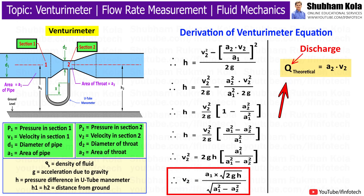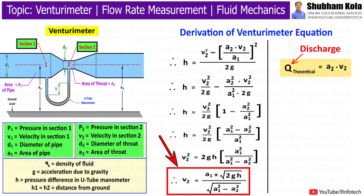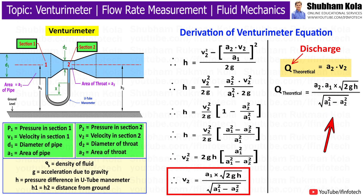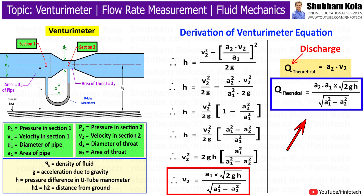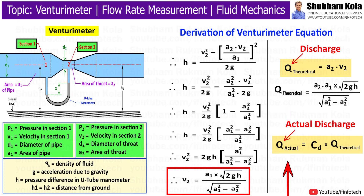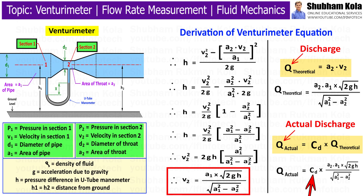The discharge through Venturimeter, i.e., Q, is equal to A2·V2. We have already obtained the equation for V2, so substituting this value, this is the discharge through Venturimeter under ideal condition, which is called the Theoretical Discharge. The actual discharge is the product of Theoretical Discharge and the Coefficient of Discharge. The value of Coefficient of Discharge, CD, varies from 0.95 to 0.99. So here we have finally completed the derivation for the Venturimeter.